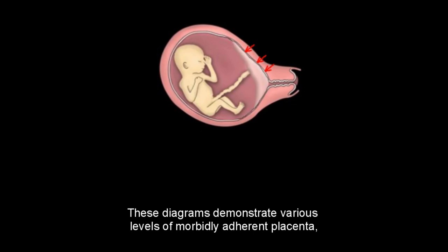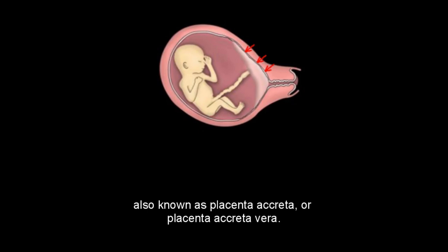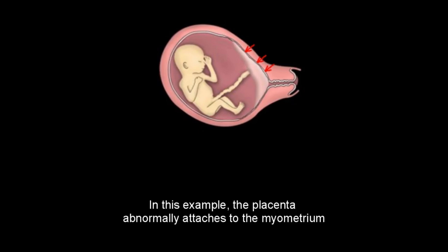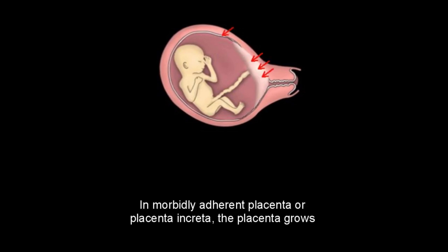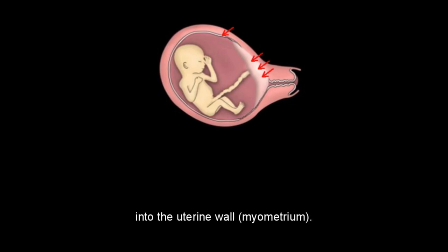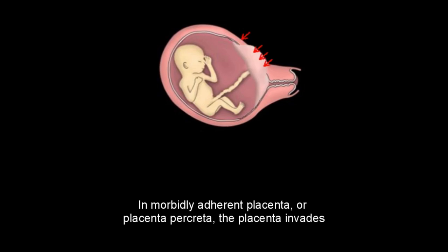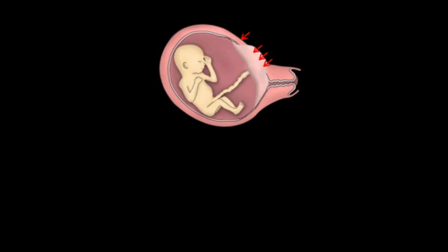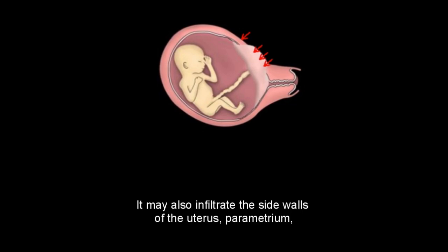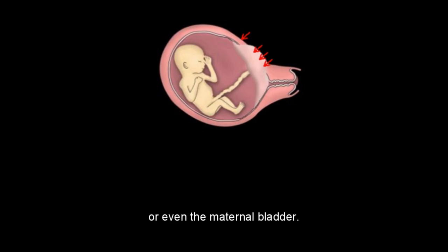These diagrams demonstrate various levels of morbidly adherent placenta. In placenta accreta vera, the placenta abnormally attaches to the myometrium and invades the decidua basalis. In placenta increta, the placenta grows into the uterine wall or myometrium. In placenta percreta, the placenta invades the uterine wall and reaches the surface of the uterus, and may also infiltrate the parametrium or even the maternal bladder.